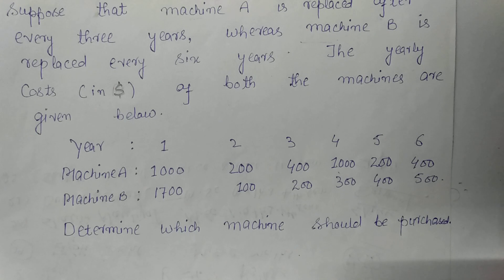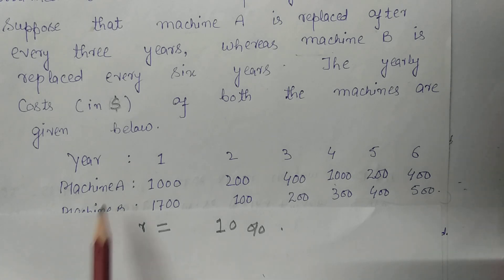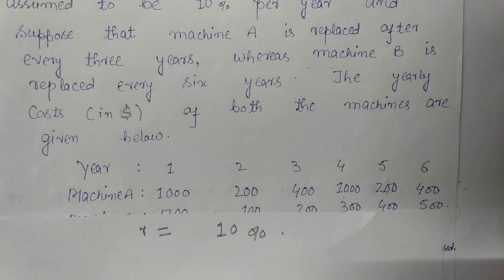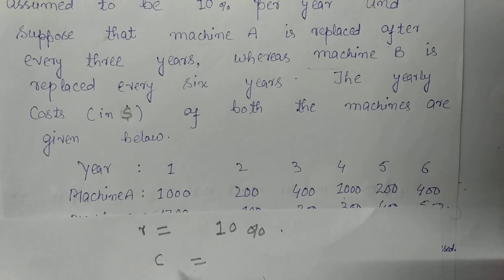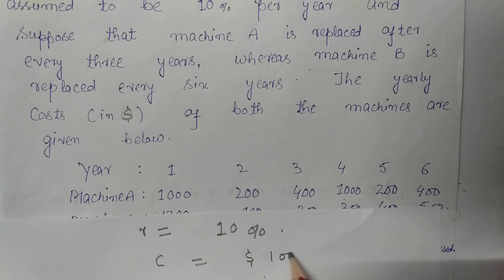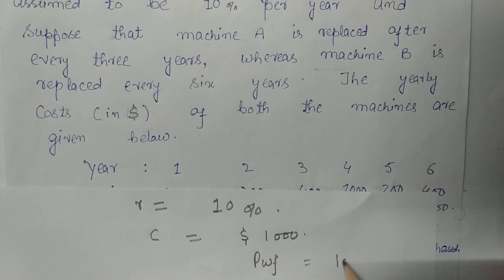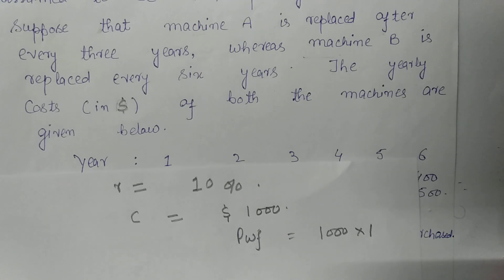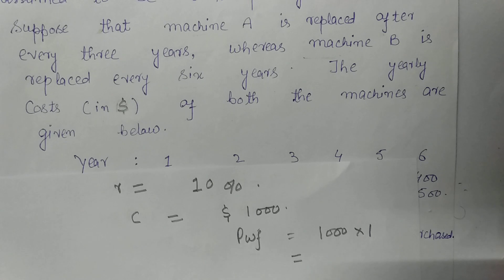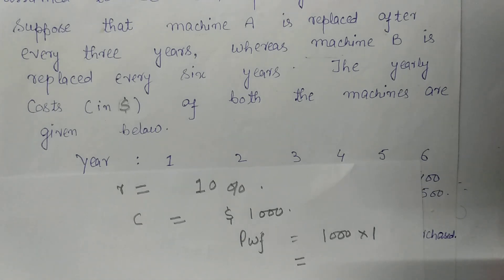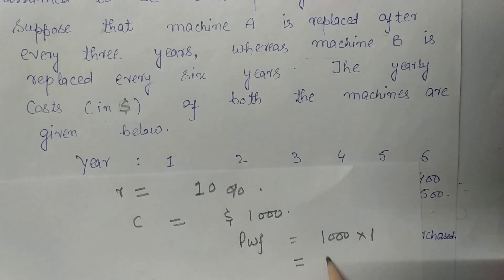We will purchase that machine whose total present worth is less than the other machine. Now let us calculate the total present worth for machine A and machine B. We will start with machine A. For the first year the cost is one thousand dollars. The present worth will become PWF equal to one thousand multiplied by one, because in the first year there is no change in the present worth value. So the present worth for year one is one thousand dollars.